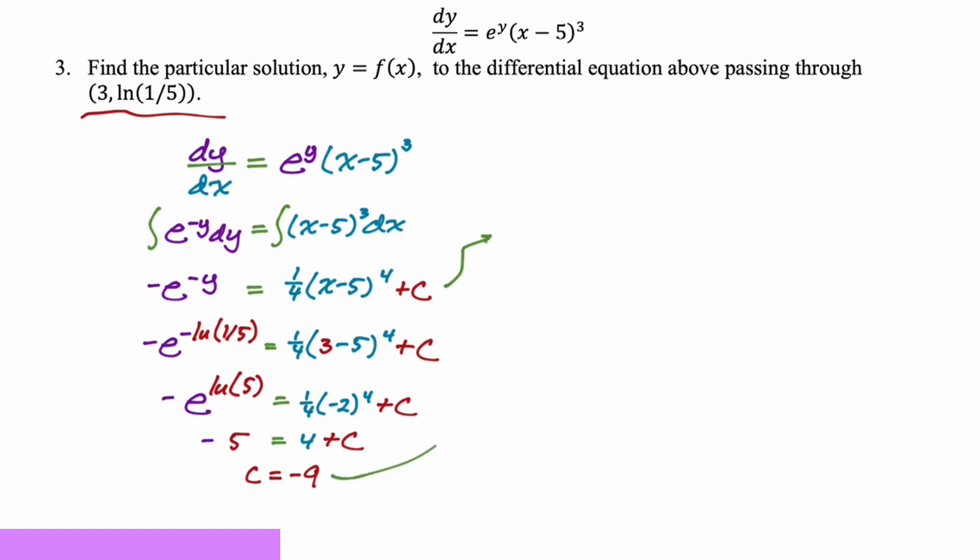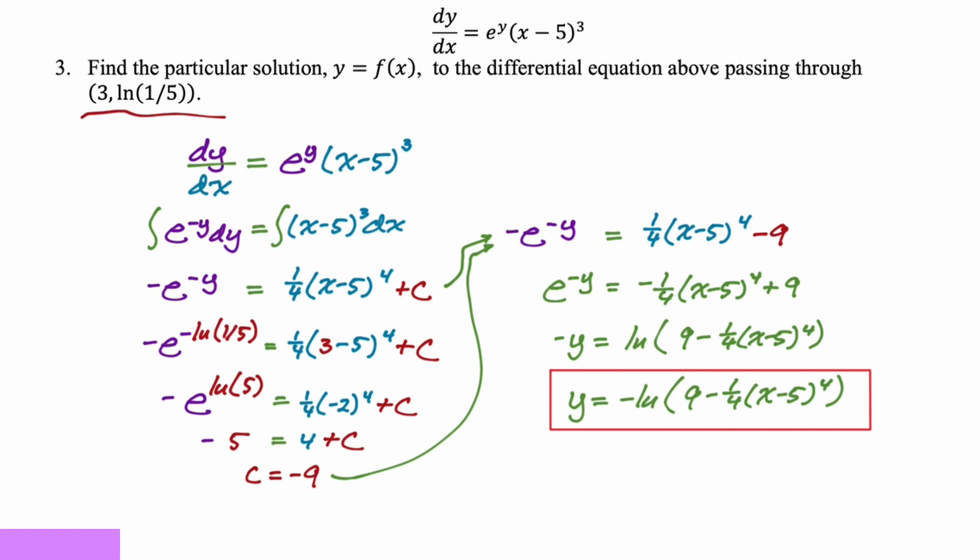We're not really done, though, because we got to go back and sub in. So here we have negative e to the negative y is one fourth the quantity x minus five to the fourth minus nine. Now we have to solve this thing for y. So what I'm going to do is multiply through by a negative. Just multiply through by a negative. I'm going to take the natural log of both sides. Natural log of both sides gives us negative y is the natural log of that right hand side. Now I'm going to divide through by a negative. That's our final answer. y is negative natural log of nine minus one fourth the quantity x minus five to the fourth.